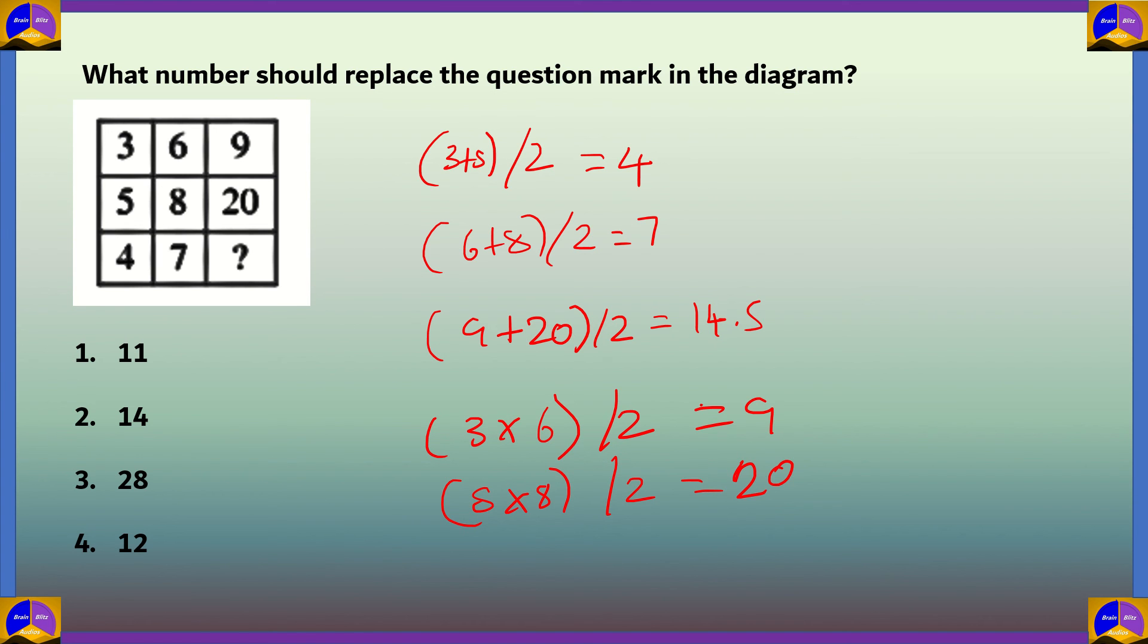If we want to find the question mark in the diagram, we'll do 4 into 7 is 28, divided by 2 equals 14. So the correct answer for this question is option 2, 14.